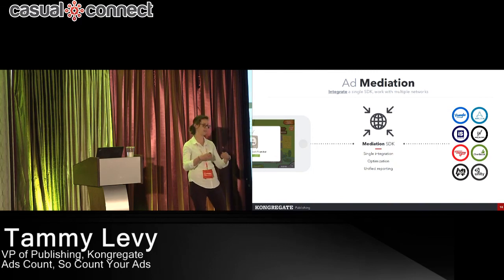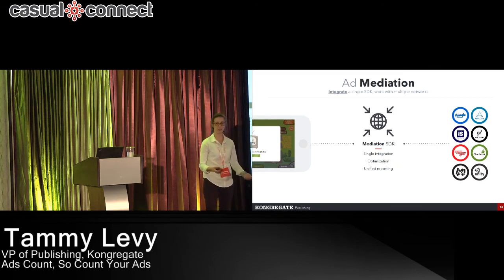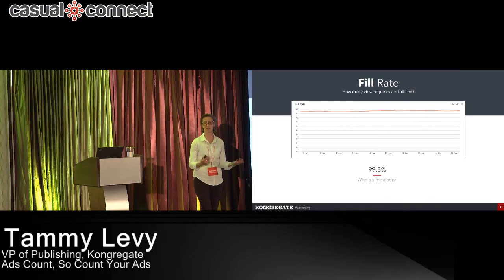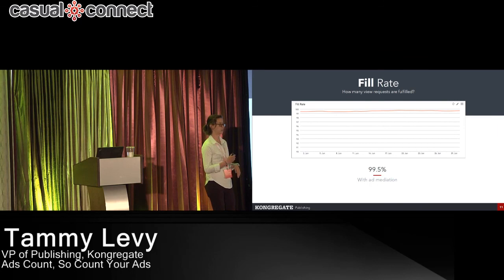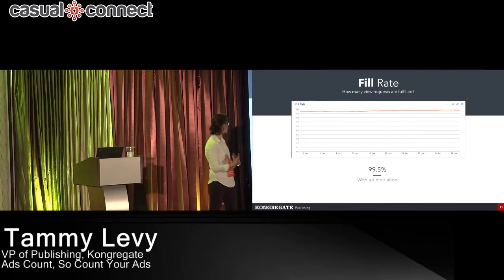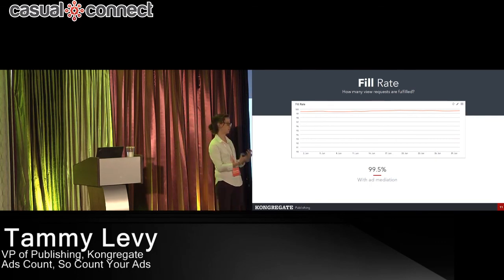That auto-optimization is usually called a waterfall — it orders networks by value and serves them in order. If there's no ad available from the first, it goes to the second and so on. You also get unified reporting instead of visiting ten different sites. When we do this, we see almost 100% fill rate — you want between 98–100%. If you're still not hitting that, we use house ads, showing ads for other games in your studio as the last fallback.